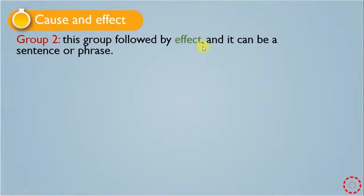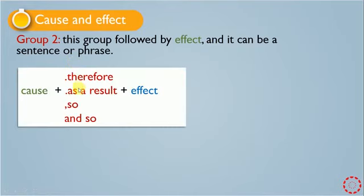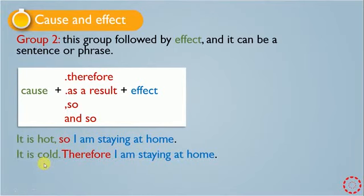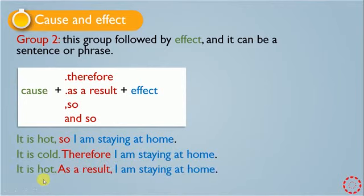The second group is followed by the effect, and it can be a sentence or phrase. These words come after the cause and are followed by an effect: 'therefore,' 'as a result,' 'so.' Look at this example: 'It is hot' — this is the cause — 'so I'm staying at home' — 'I'm staying at home' is the effect. Also: 'It is hot, therefore I'm staying at home.' And: 'It is hot, as a result, I'm staying at home.'